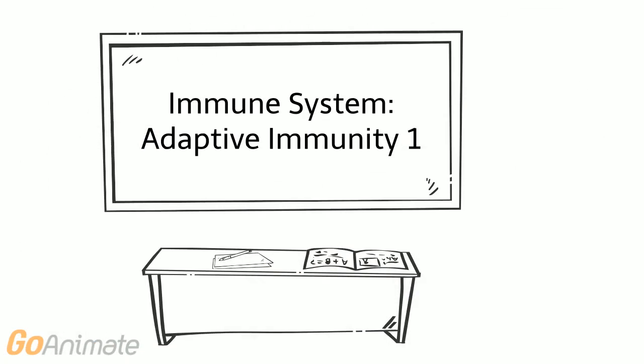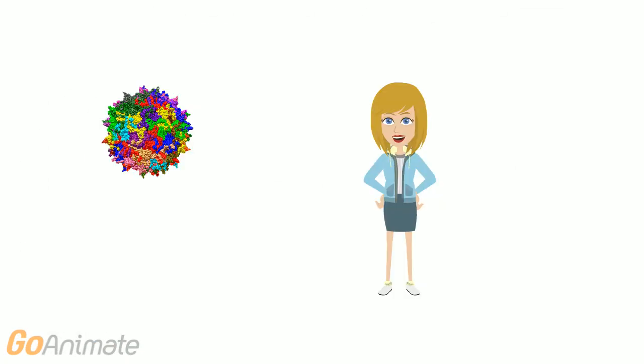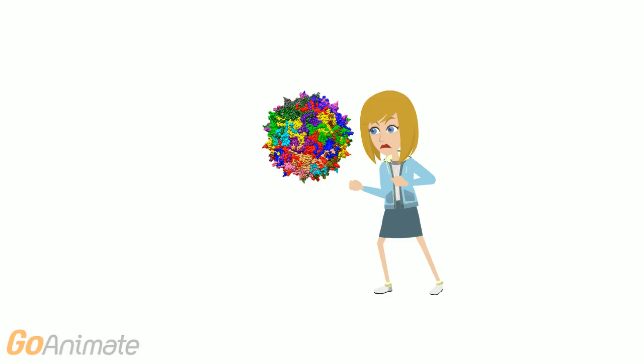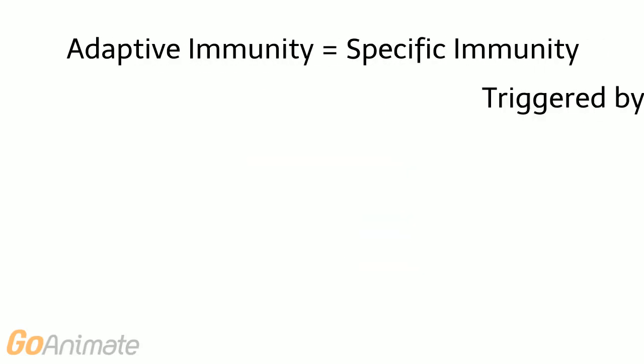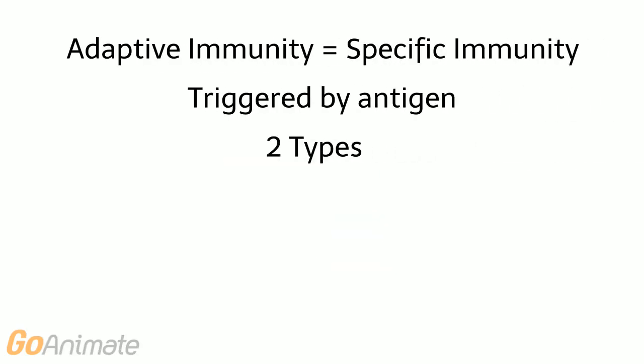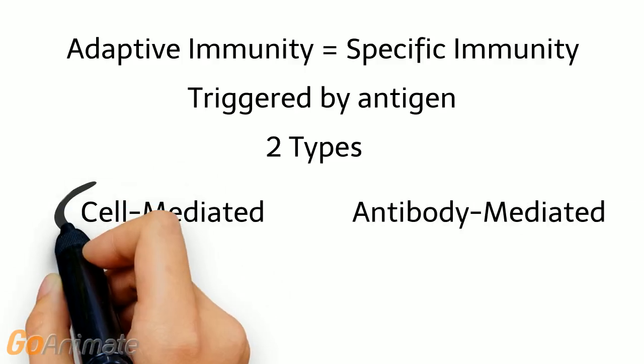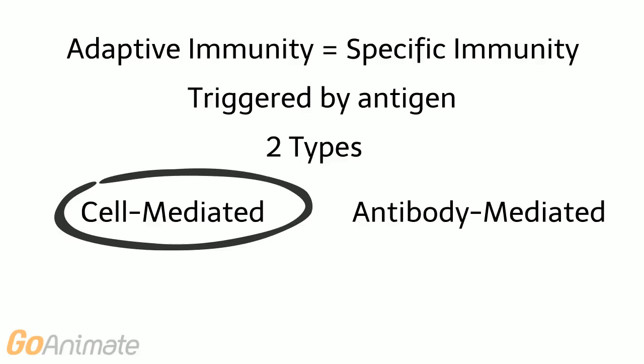Let's learn about adaptive immunity. The human body has a number of ways to fight off nasty pathogens. There are two types of adaptive or specific immunity: cell-mediated and antibody-mediated. This video covers cell-mediated immunity.